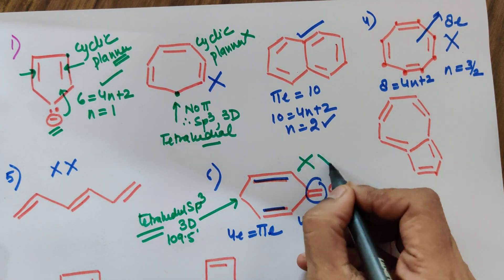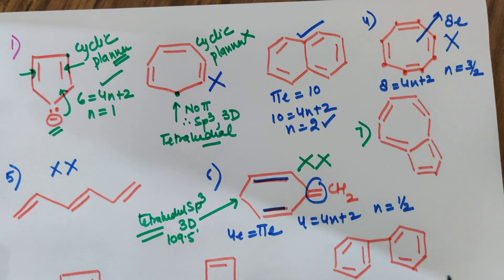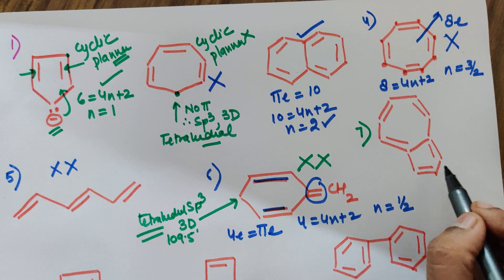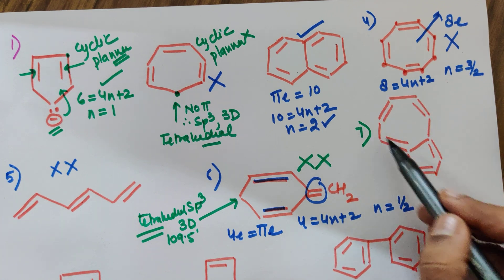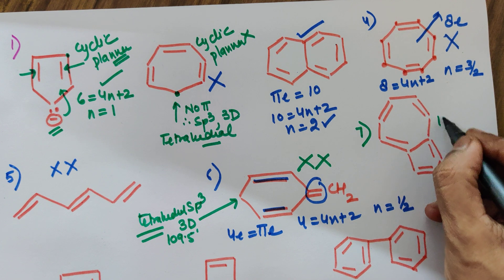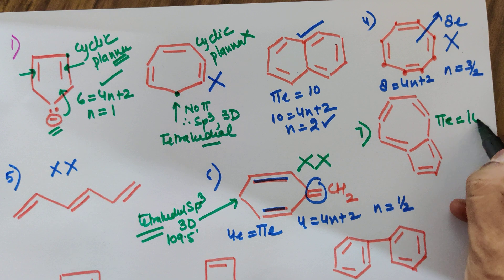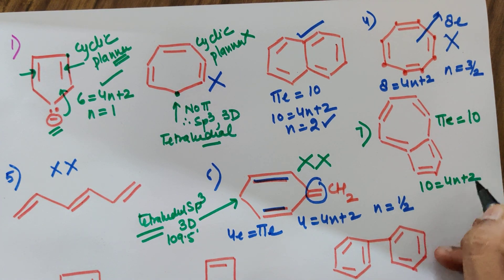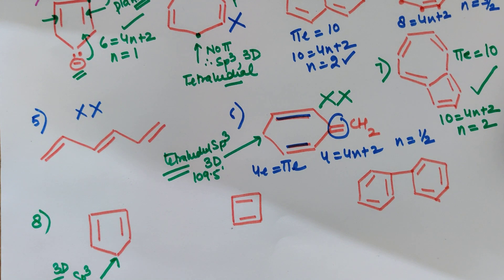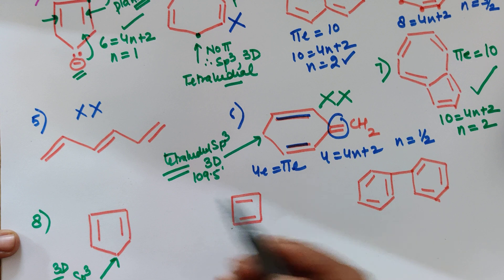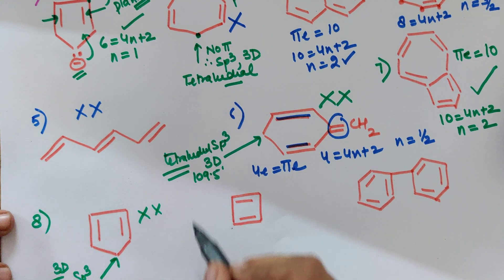Example 7: Is it cyclic? Yes. Do all carbons have at least one pi bond (sp2 hybridization)? Check — yes, all carbons have a pi bond. Counting pi electrons inside the ring: 1, 2, 3, 4, 5 pi bonds — so 10 electrons. 10 = 4n + 2 gives n = 2, a whole number. This compound is aromatic. Example 8: The problem is one carbon has no pi bond, making it sp3 and three-dimensional — not planar. So this is not aromatic.